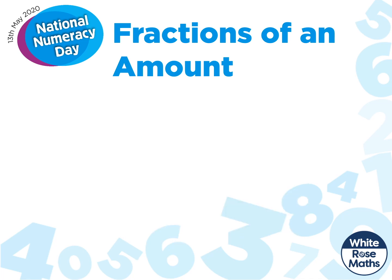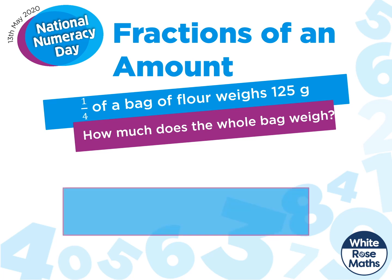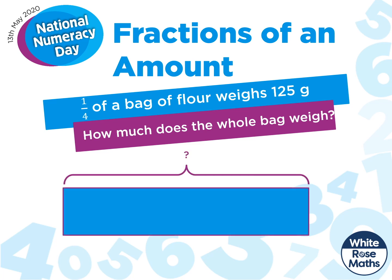Once you become confident using a bar model to represent fractions of an amount, you'll be able to tackle more complex problems like this. A quarter of a bag of flour weighs 125 grams — how much does the whole bag weigh? So this time we need to work out the whole amount but we're given a fraction. We're told that a quarter weighs 125 grams, so let's split our bar into four equal parts. We know all the parts are equal, so they all must be 125 grams. Our total is 500 grams — the flour weighs 500 grams. Simple.